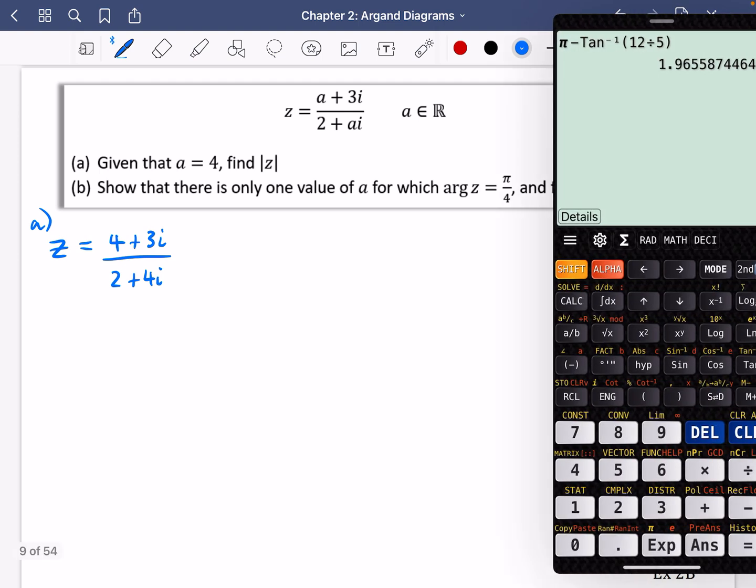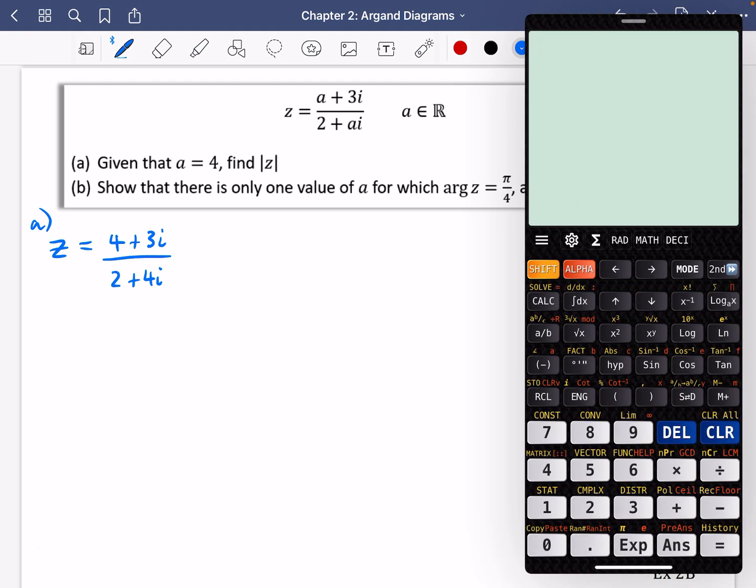So you can either do that on your calculators. I'm just going to use my one here rather than turning my camera on. So 4 plus 3i, it's under the shift in the ENG for me, and then 2 plus 4i. And we get 1 minus a half i. So that's 1 minus, I'm going to write it as a fraction. I'm a bit more into fractions for this.